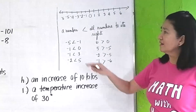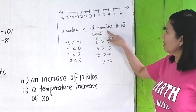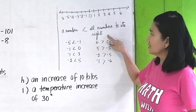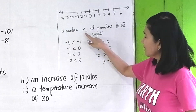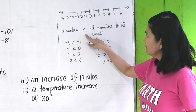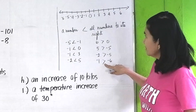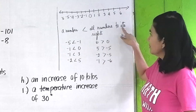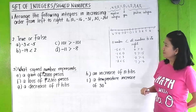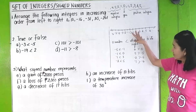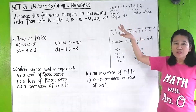Did you get it? Again, a number is always less than all numbers to its right. In the same manner, a number is greater than all numbers to its left.